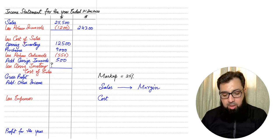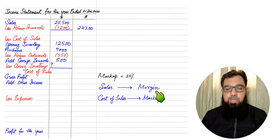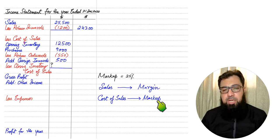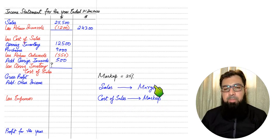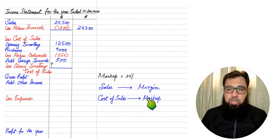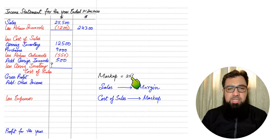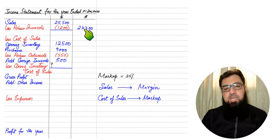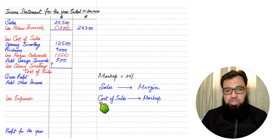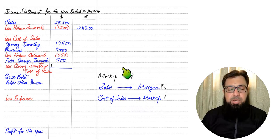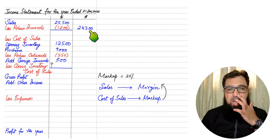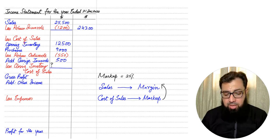There are two types of percentages: margin is applied on sales to calculate gross profit, and markup is applied on cost of sales to calculate gross profit. If we have sales and are given a margin, we apply margin on sales to get GP. If we have cost of sales and are given markup, we apply markup on cost of sales. The issue arises when we have a sales figure but are given a markup percentage — markup cannot be applied on sales, so we need to convert markup to margin. Margin is easily applied on the sales figure.